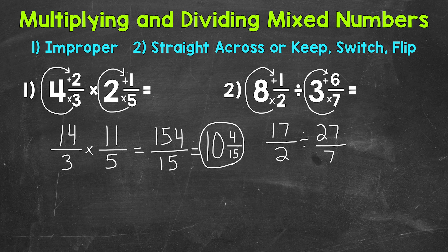So now we have numerators and denominators only, and we can go through our dividing fractions steps: Keep, Switch, Flip. So we always keep our first fraction. Let's rewrite this problem using those steps. Keep 17 over 2. Switch division to multiplication, the opposite of division here.